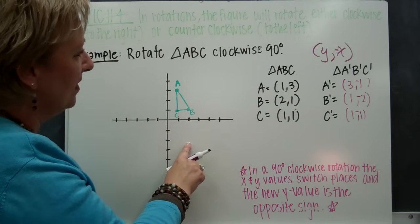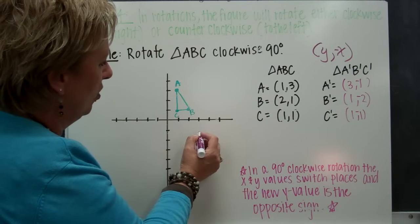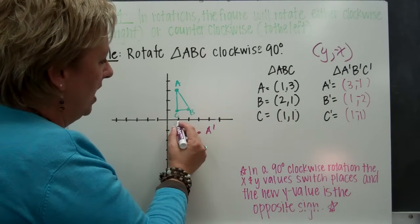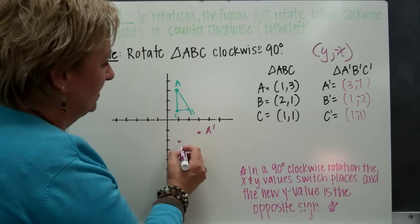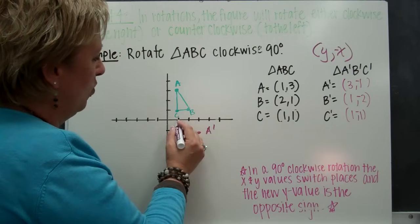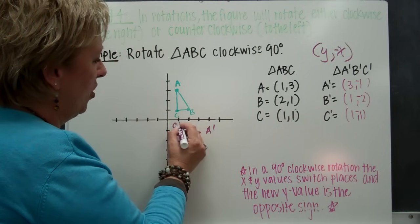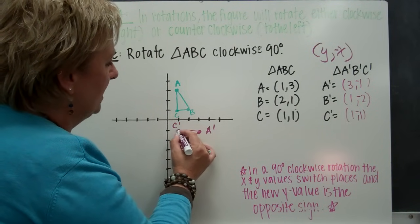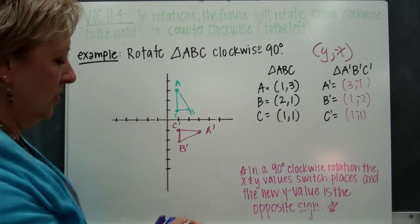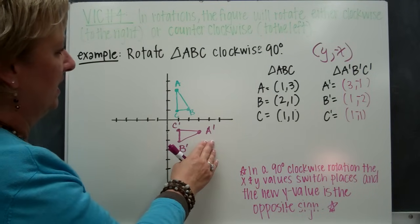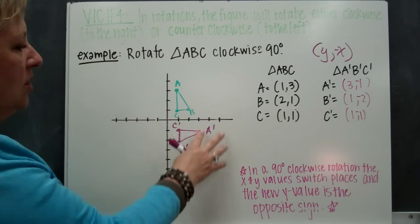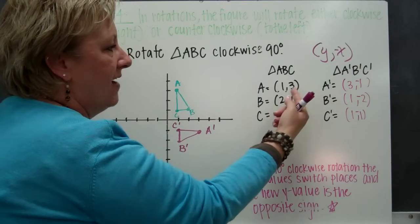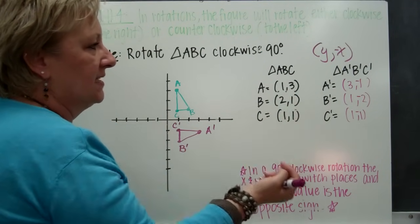So when I graph the prime of these: A-prime is at (three, negative one); B-prime is at (one, negative two); and C-prime is at (one, negative one). Connecting these together, I have rotated the triangle 90 degrees into quadrant four — well, into quadrant two — which gives positive-negative coordinates, because I flipped the X and Y values and made the X value negative.